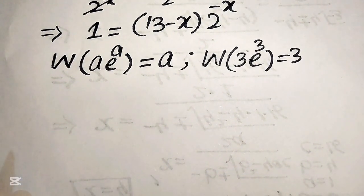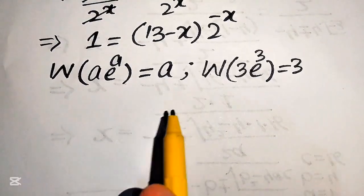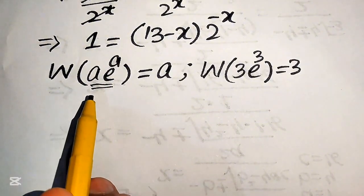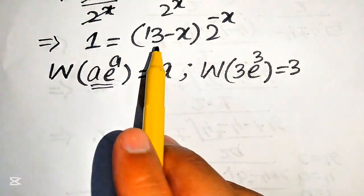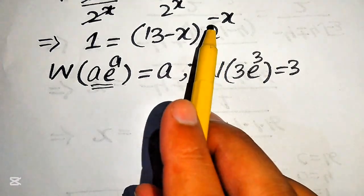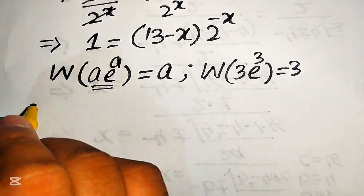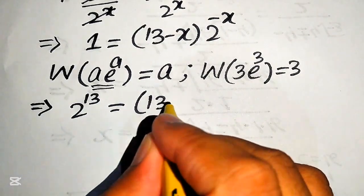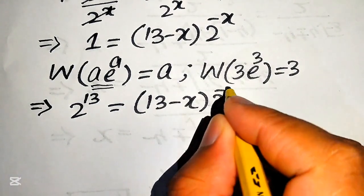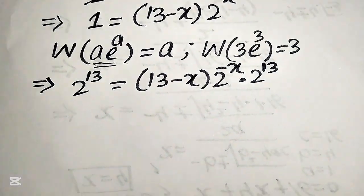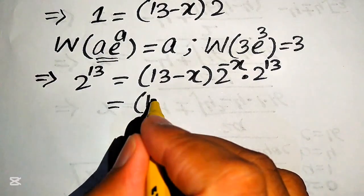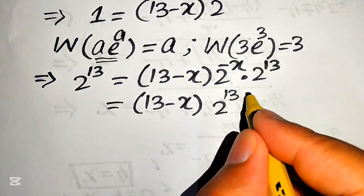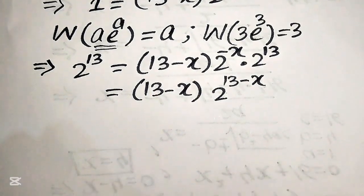We need to make the right hand side match the form required for the W function. We see that we have 13 minus x, so we need a 13. To achieve this, we multiply both sides by 2 to the power of 13, giving us 2 to the power of 13 equals 13 minus x times 2 to the power of minus x times 2 to the power of 13. We add the exponents to get 13 minus x into 2 to the power of 13 minus x.